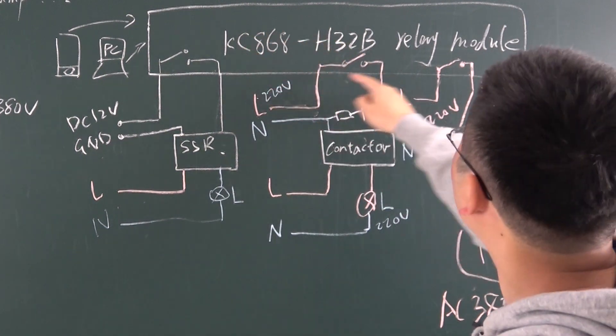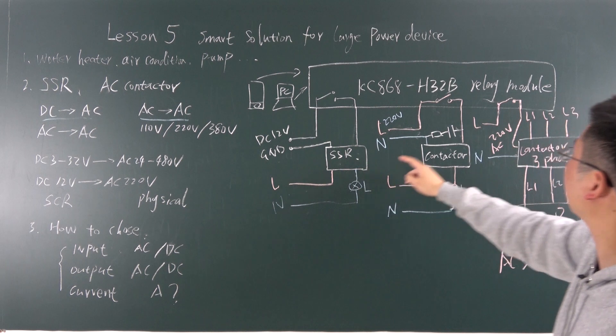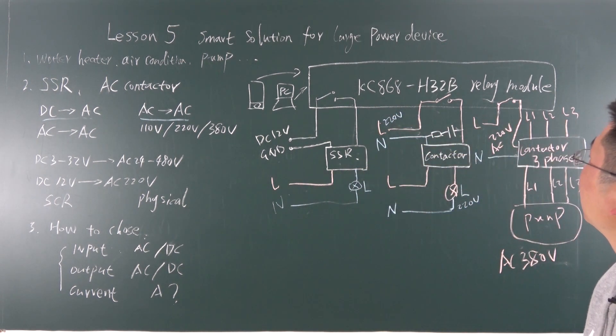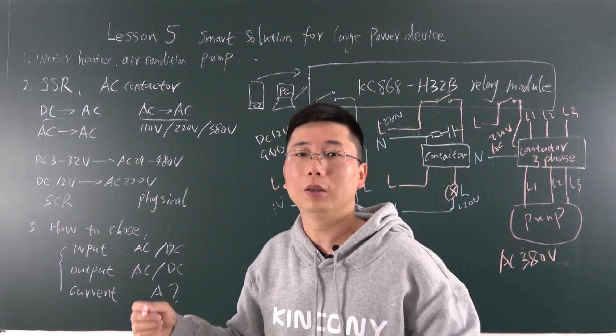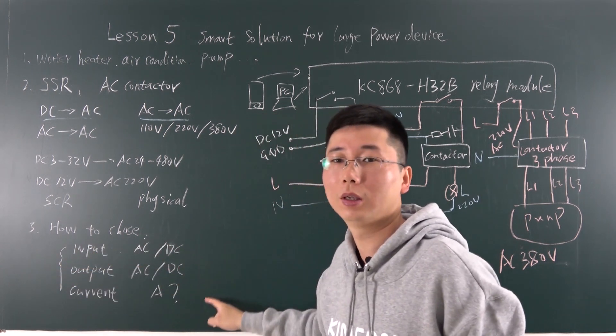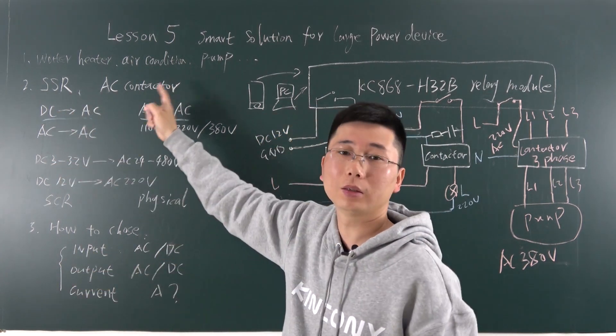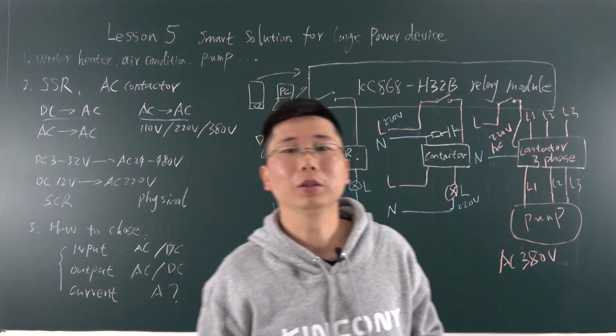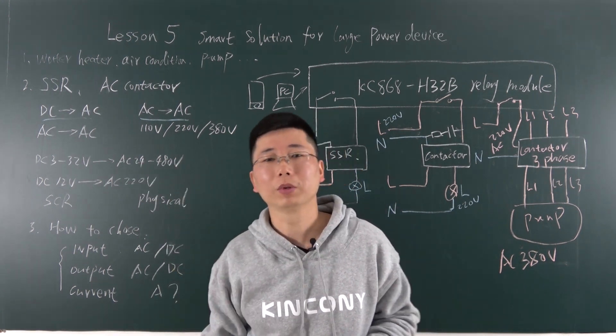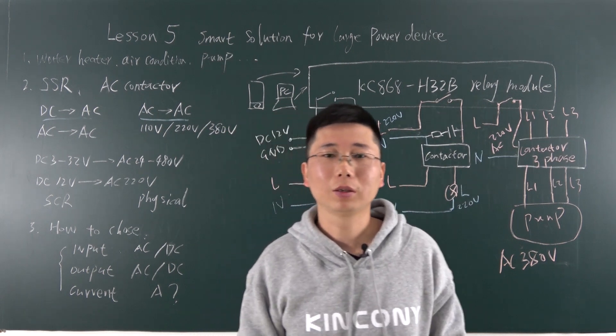So this is the relay module. To control by the SSR. And the contactor. Different typical ways. So this is a solution. Control large power device. Just according to this. You can choose. Use by SSR. Or use by AC contactor. Connect to your relay module. Just any relay module. Just connect with these two types. You can extend your power to control. OK. Thanks for watching.